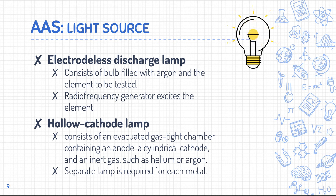The hollow cathode lamp consists of an evacuated gas-type chamber containing an anode, a cylindrical cathode, and an inert gas — usually argon or helium. It requires a separate lamp for each metal. So if you are measuring aluminum, a different lamp is required; the same for copper, zinc, and so forth.